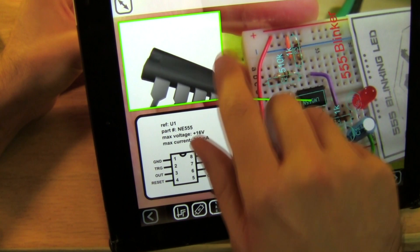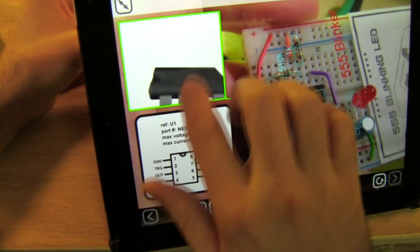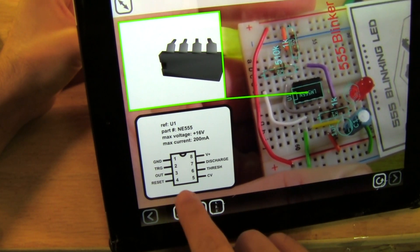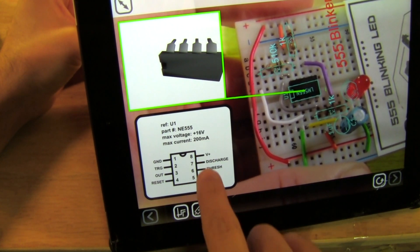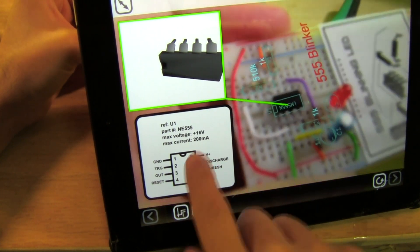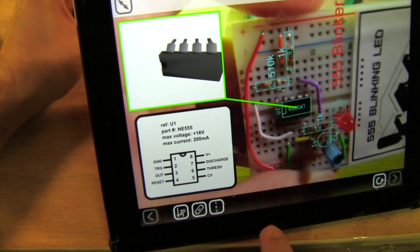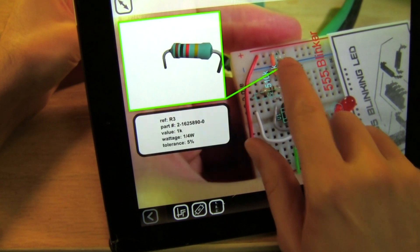I've got a 3D view that I can rotate around and zoom in and out on, and then also some relevant part information like the pin out reference and some choice specs like max voltage and the max output current. Let's do R3 too.